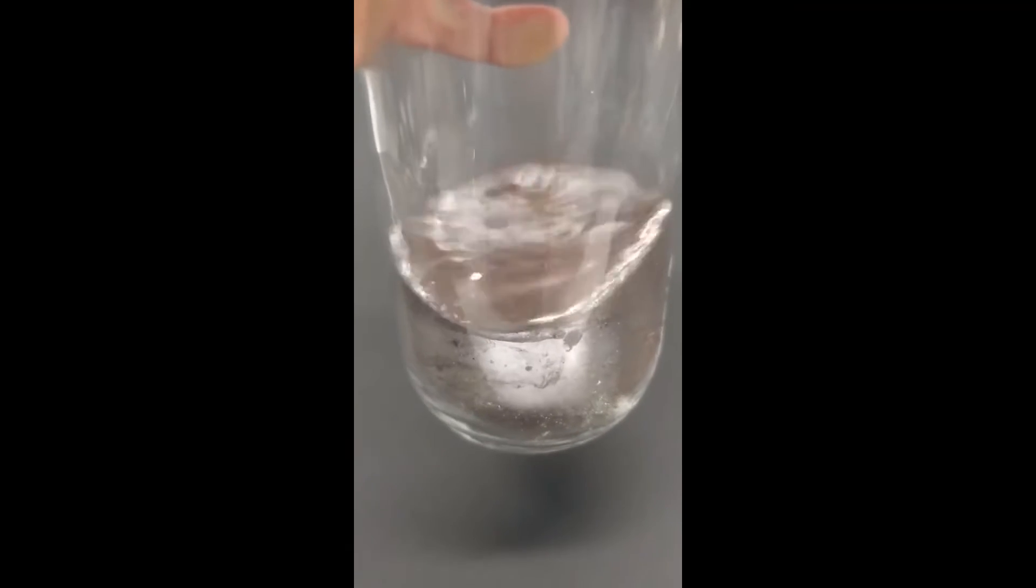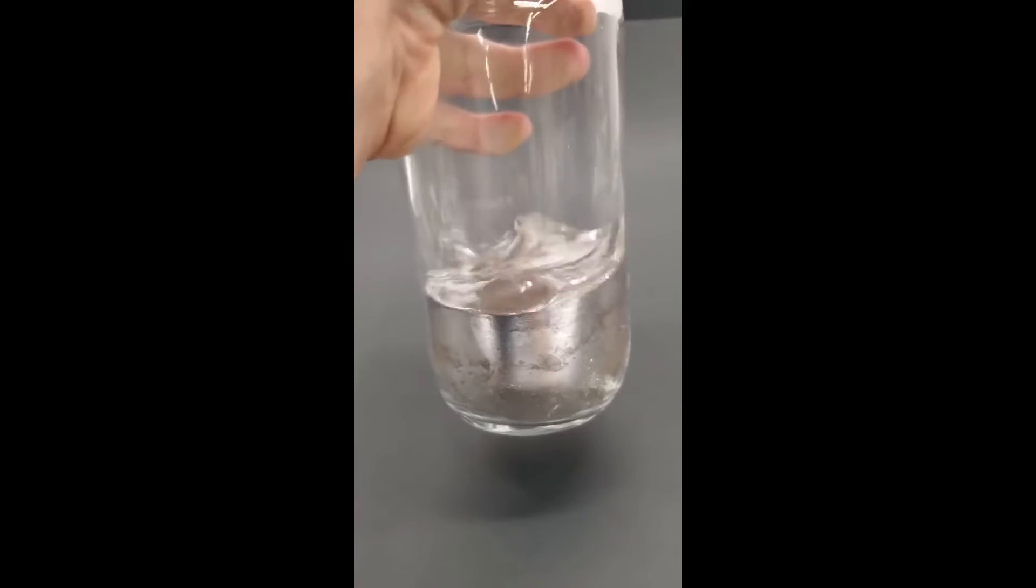Mercury is the only metal that's a liquid at room temperature, and something that I've always wanted to do was to try making it solid.